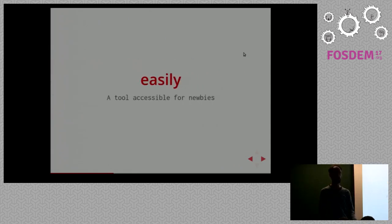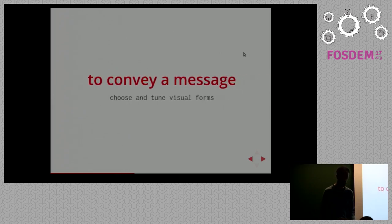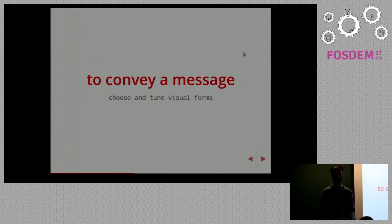Our first objective is to make things as easy as possible, so we want the tool to be accessible for newcomers — more specifically, second-year licensed students, about two years after the baccalaureate in France. We want to create a map, of course, which means having a way to upload data, choose which map projection to use, and then be able to choose and tune visual forms to map the data onto the picture, so the map conveys a message.